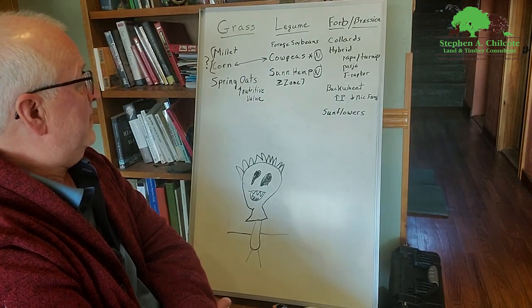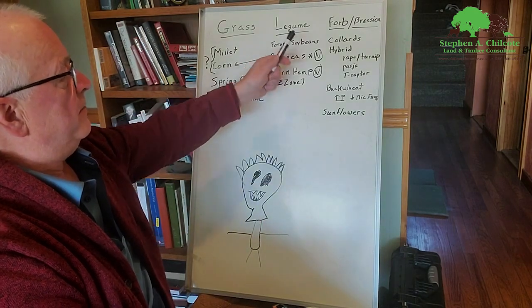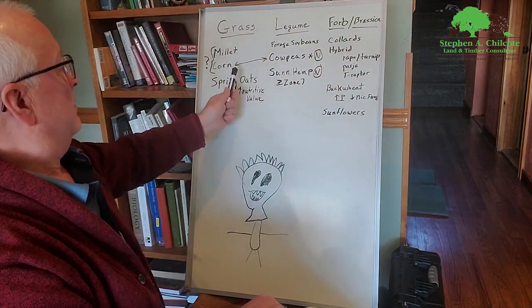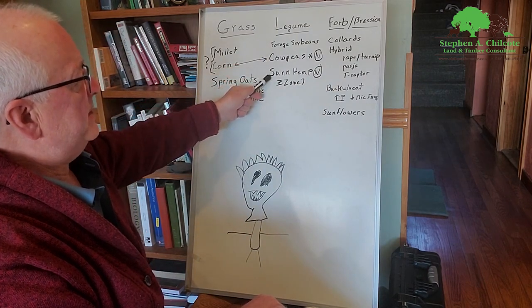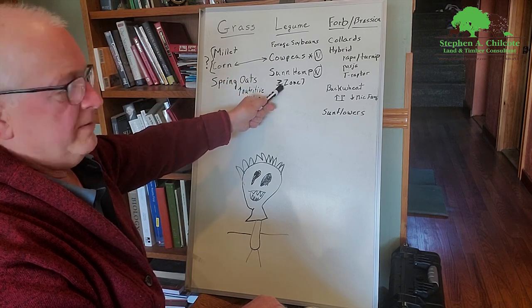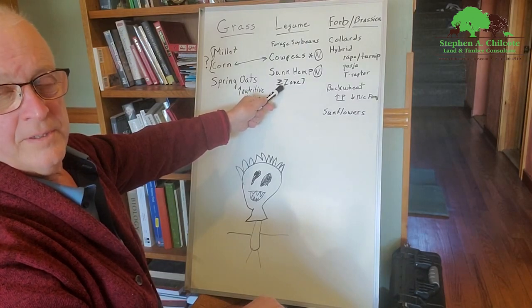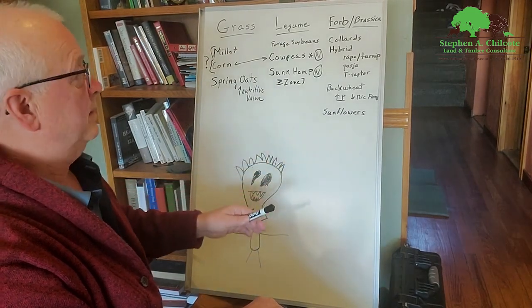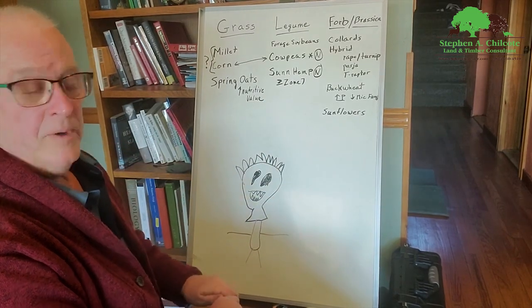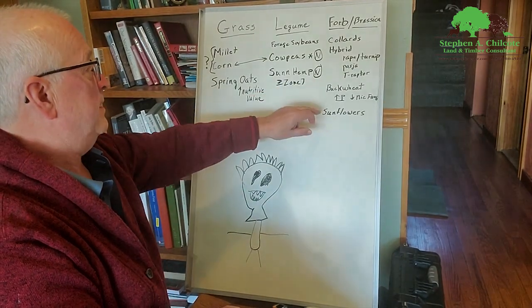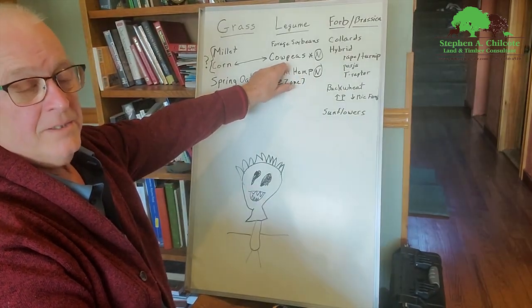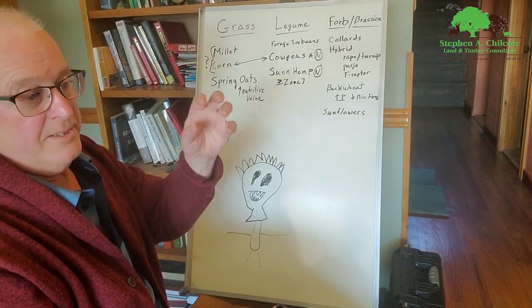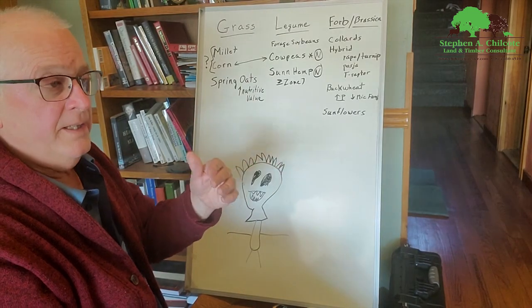Getting over into our legume group now. What you want to do is try and get at least one out of each group, better if you have two. So legumes: we have forage soybeans, cow peas, sun hemp. I don't have much luck with sun hemp unless I'm at least zone seven or above. As you go south they do much much better. They need hot weather, long growing season. They do really well in hot weather and they fix more nitrogen than just about anything. Cow peas too—cow peas are fantastic because they're kind of like a forage soybean in that they will nodulate really well.